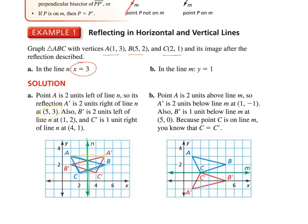Then I have B. B is two units away from the line on the right side, so it's going to end up two units away from the line on the left side, ending up at (1, 2). And then I have C, which is one unit away from the line on the left side. So C prime is going to end up one unit away on the right side. Okay, that's all there is to it.